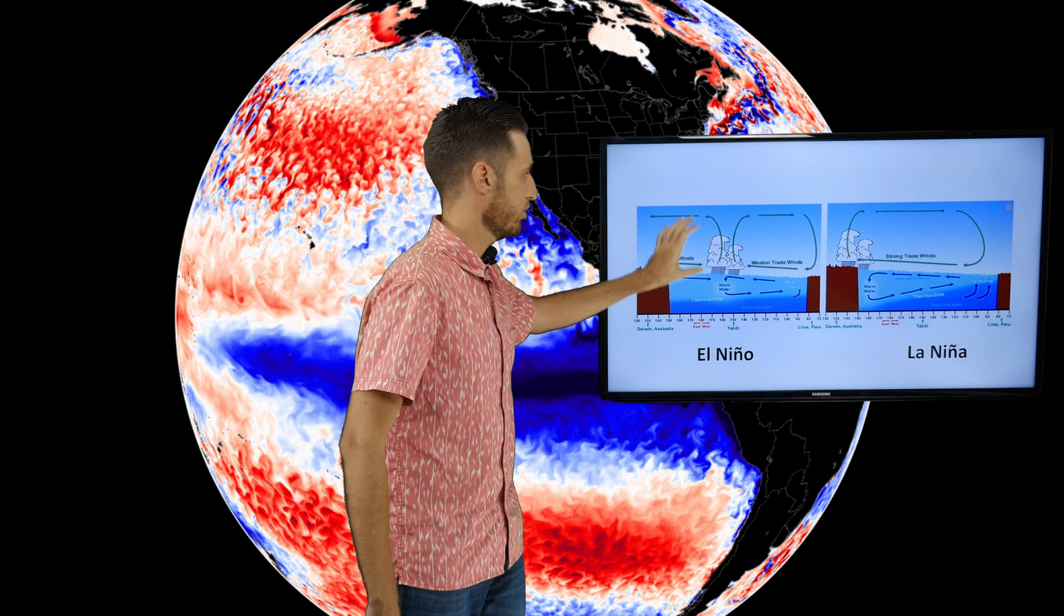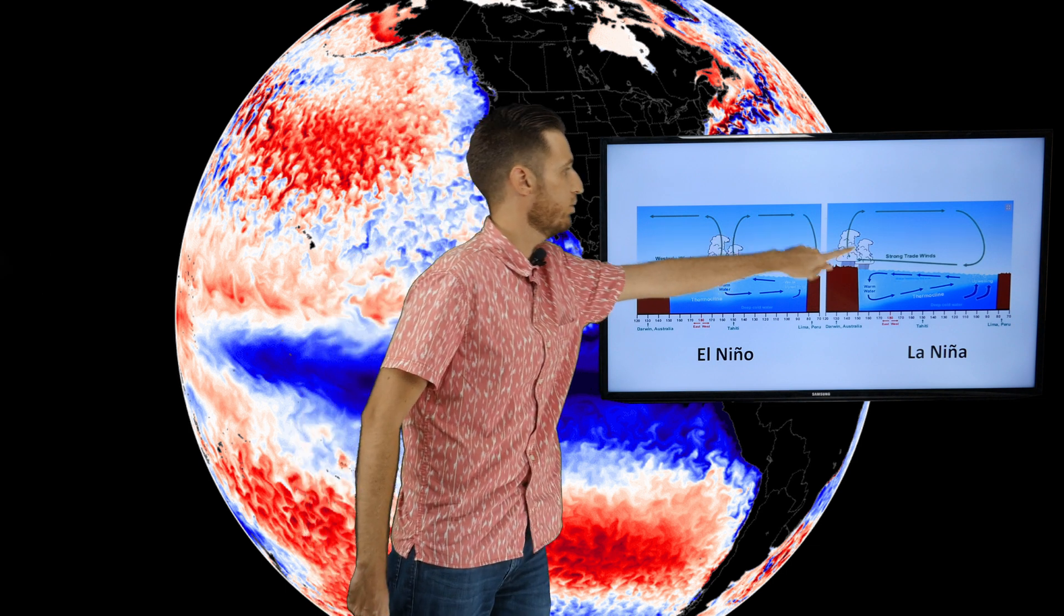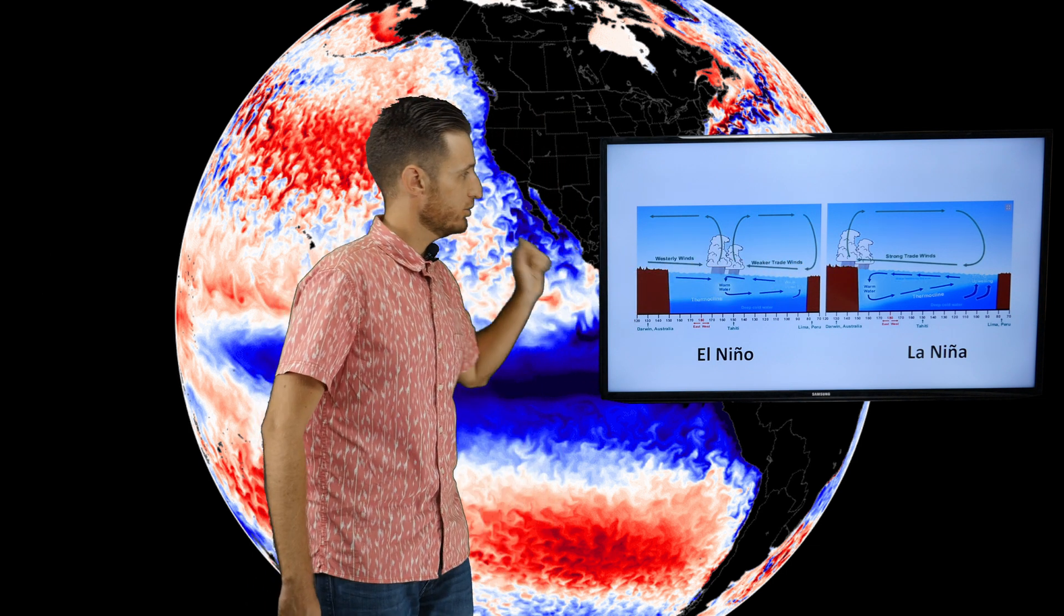This one has the warm waters over the eastern Pacific and the central Pacific and the other one, La Niña, has the colder waters over those areas. Let's go to the next one.